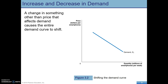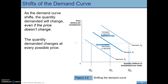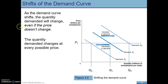When we talk about an increase in demand or a decrease in demand, we are talking about shifts to the demand curve — not an increase in quantity demanded or decrease in quantity demanded, but increase and decrease in demand. Think shifters: these are things that shift the demand curve. An increase in demand is going to be a shift to the right; a decrease in demand would be a shift to the left. As the demand curve shifts, the quantity demanded will change even if the price doesn't change.